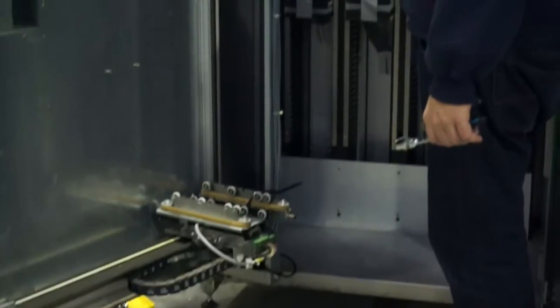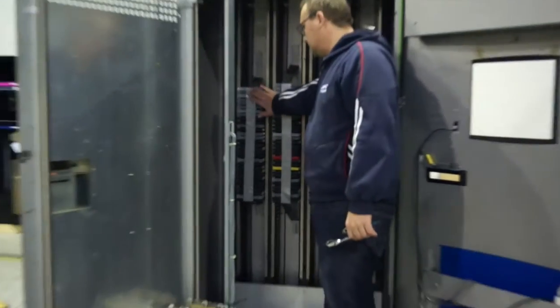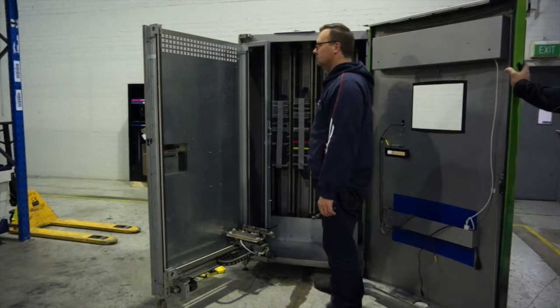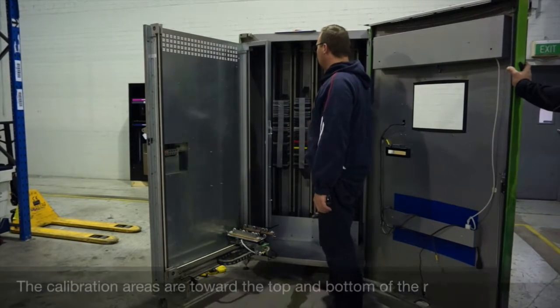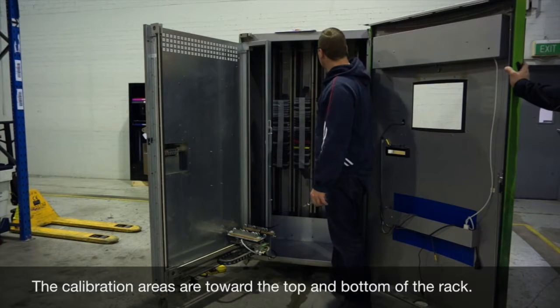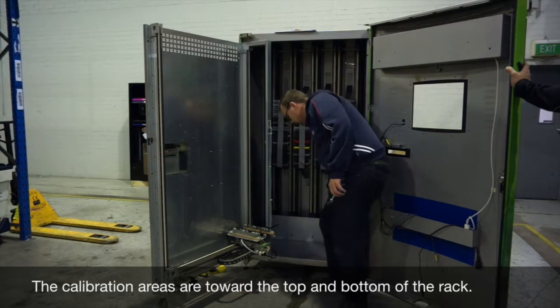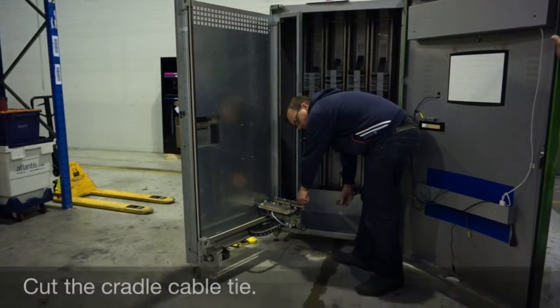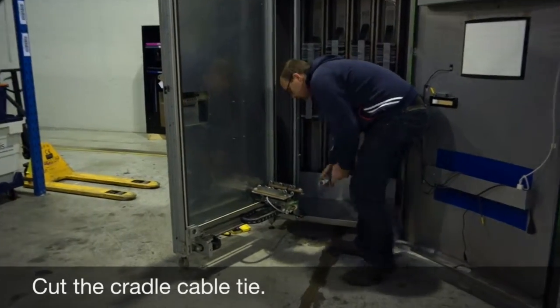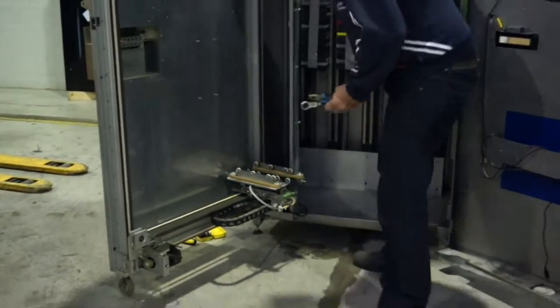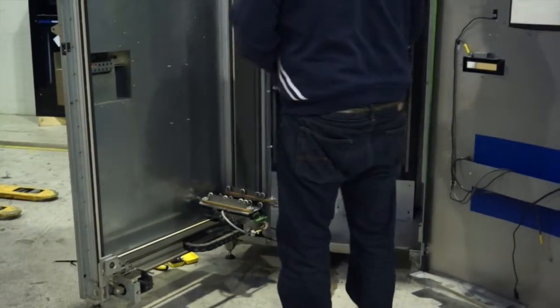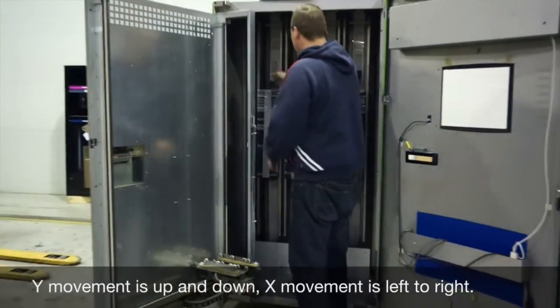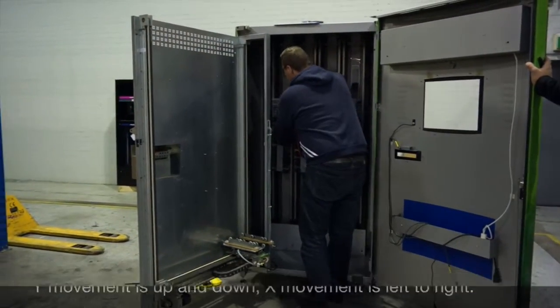Yeah, we try and load the machine up with stock right in the middle of it. That just helps avoid any mistakes later on and unnecessary work. So the calibration area is up here and down the bottom. X and Y is up and down, yeah, it's a pretty smart concept and how they've done it.